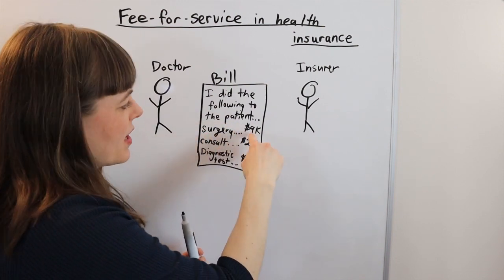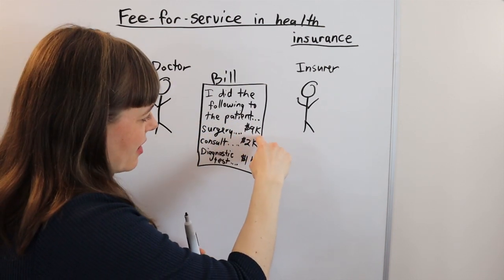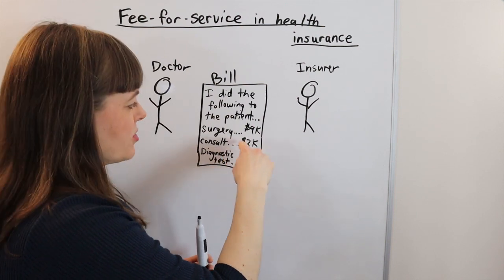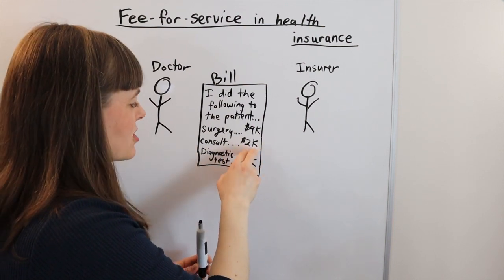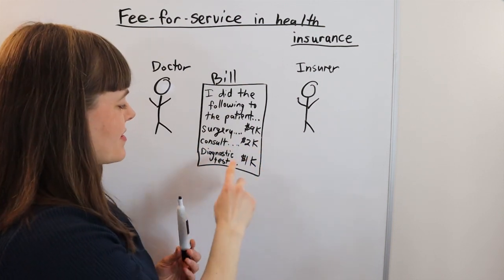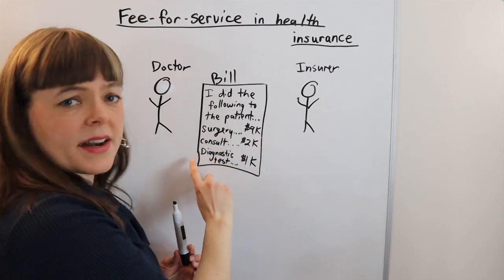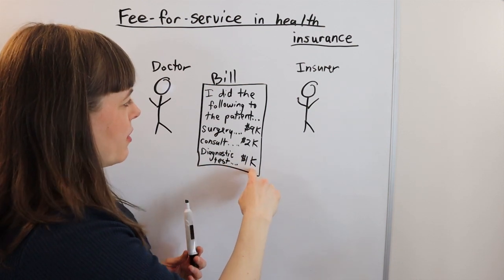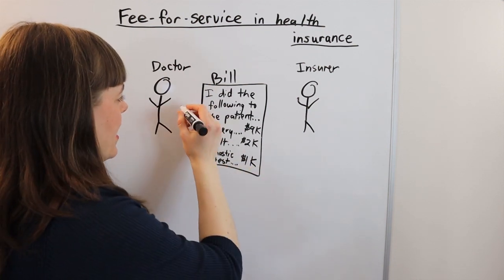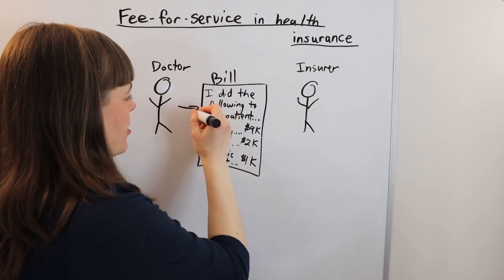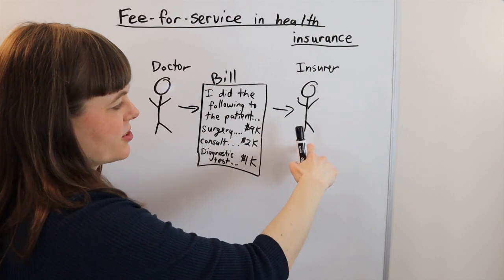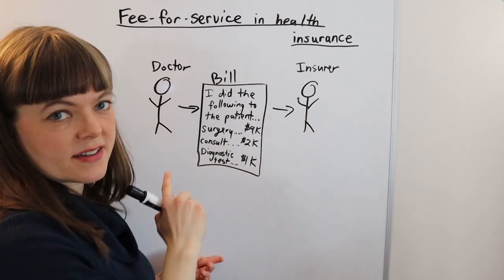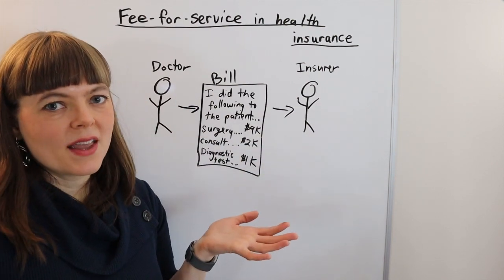For example, the doctor did surgery and is charging nine thousand dollars for that, consulted with the patient a few times and is charging two thousand for that, and did some diagnostic testing charging one thousand. The doctor then sends that bill to the insurer and the insurer pays it. Very simple.